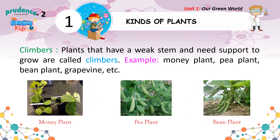Climbers: Plants that have a weak stem and need support to grow are called climbers. Examples: Money plant, pea plant, bean plant, grapevine, etc.